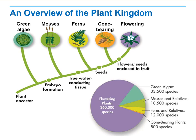When we talk about types of plants, we start with green algae, then mosses and their relatives, ferns and their relatives, and finally cones and their relative types of plants.